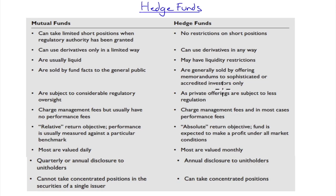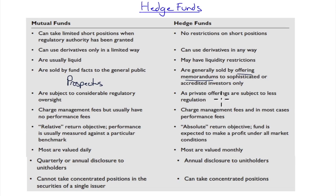Hedge funds are generally sold by offering memorandums to sophisticated or accredited investors only, whereas the mutual fund is sold to the general public by prospectus. Offering memorandums are typically for private placements — they don't have to do the full prospectus. As private offerings they are subject to less regulation. Mutual funds have huge amounts of regulation because if you're taking money from the general public, they need to be protected.